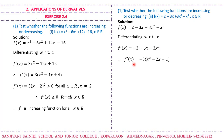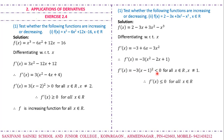Therefore f'(x) = -3(x² - 2x + 1), which is a perfect square: -3(x - 1)². For every real number, (x - 1)² is always greater than or equal to zero — a positive quantity — but multiplied by -3, a negative quantity, the product becomes negative. So f'(x) ≤ 0 for all x ∈ ℝ, and hence the function is decreasing for all x ∈ ℝ.